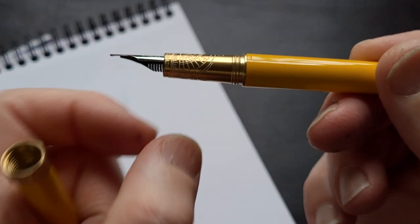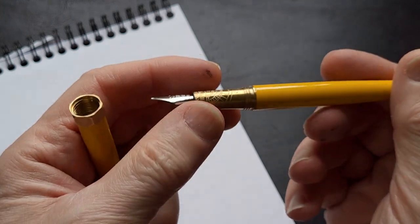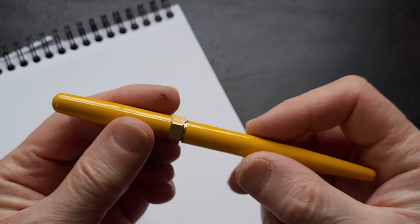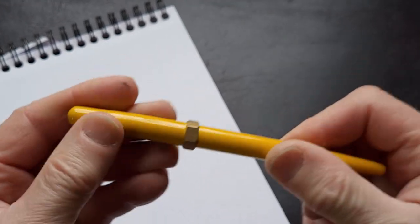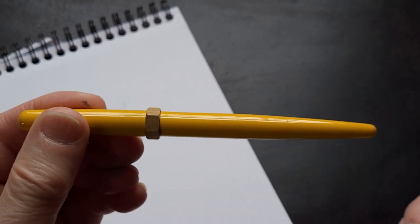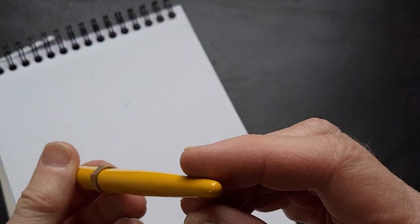One thing I do like is the screw threads are on the brass section here so you're not having brass on plastic that would eventually strip the threads on the plastic body. That's actually quite well thought out. Very solid when you close it up, it's a nice solid seal, probably very airtight. I don't see a breather hole anywhere on the pen at all.